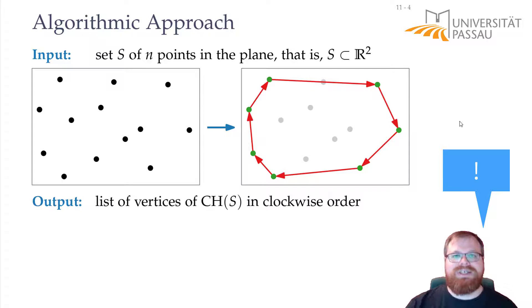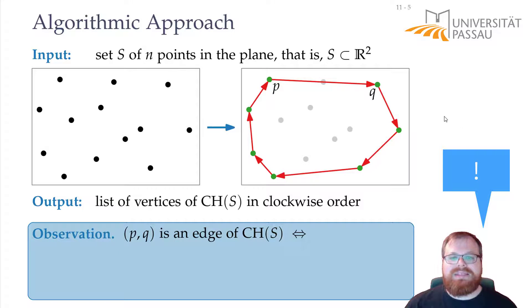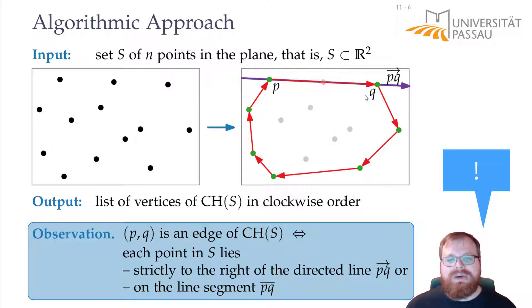This is our first observation. We can say that an edge between two points p and q is an edge of the convex hull if and only if all the points of our input set lie either on the straight line between p and q or to the right of the directed line. So in this case, since we go from left to right to q, all the points must lie either on this line like this point or below it. The same holds true for all these segments on the convex hull.